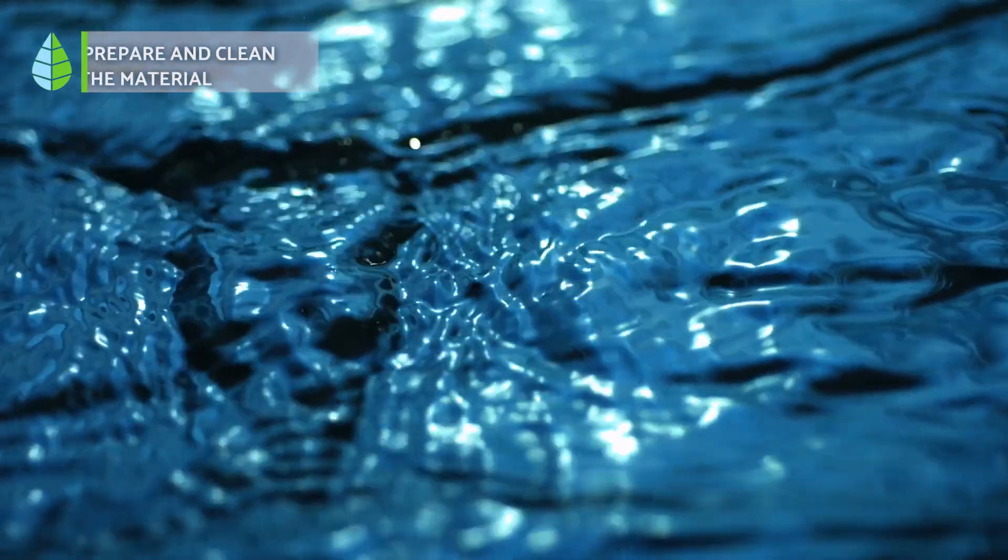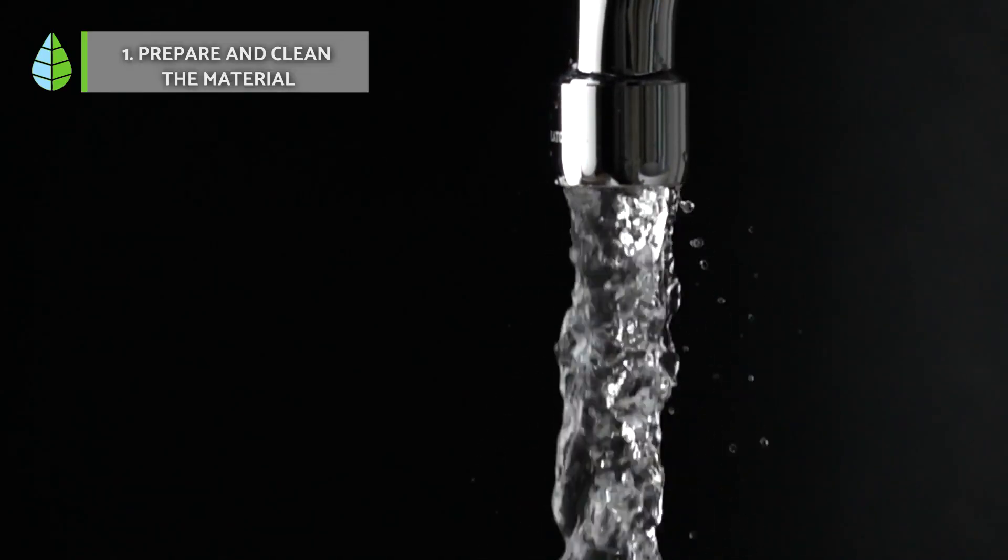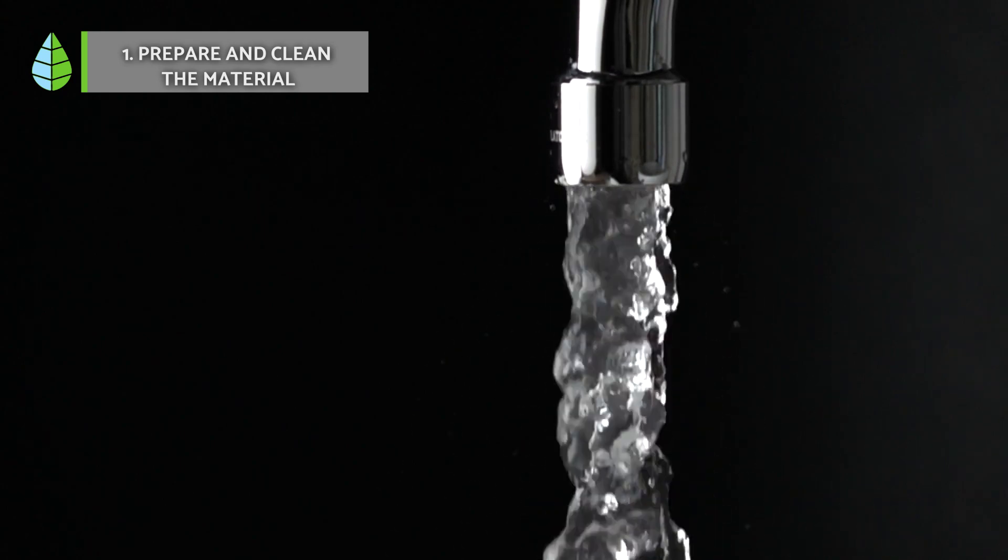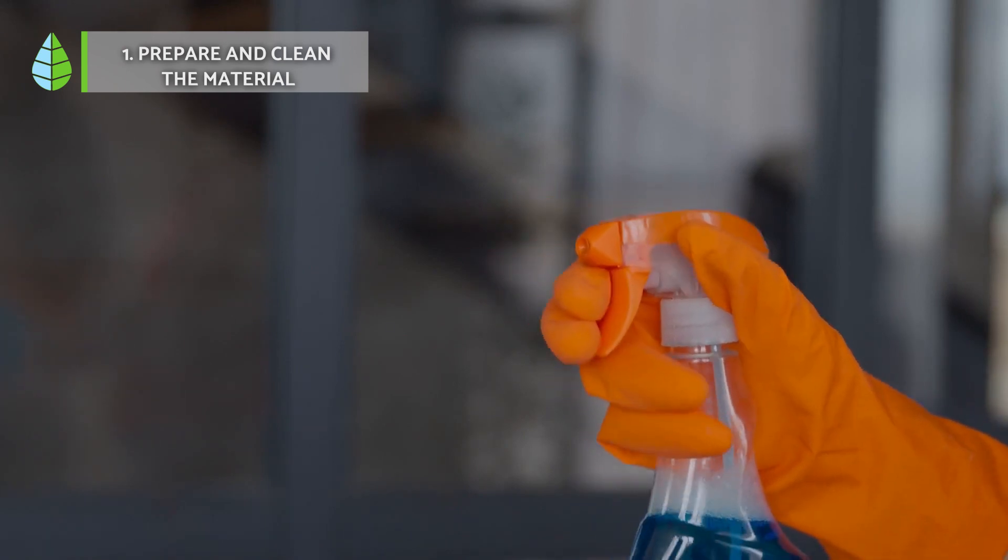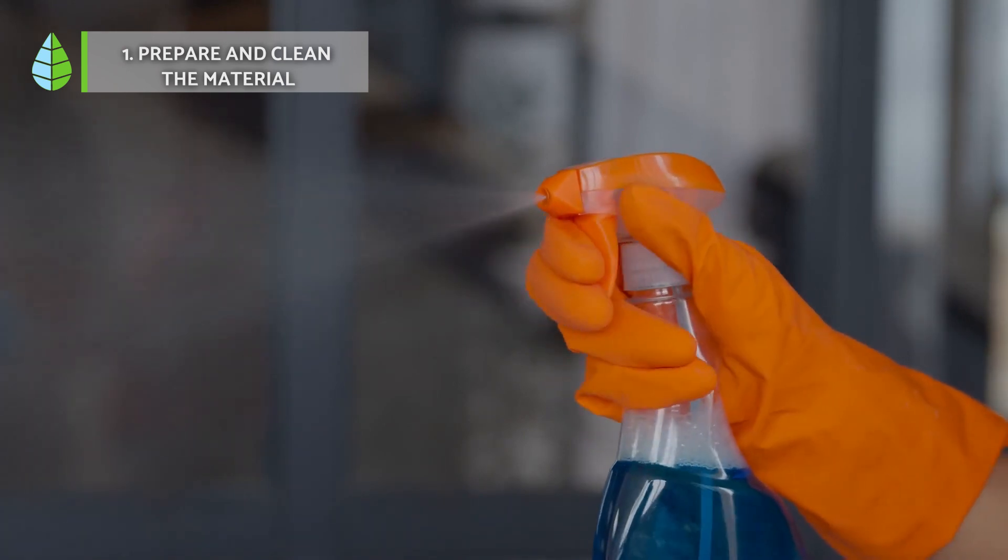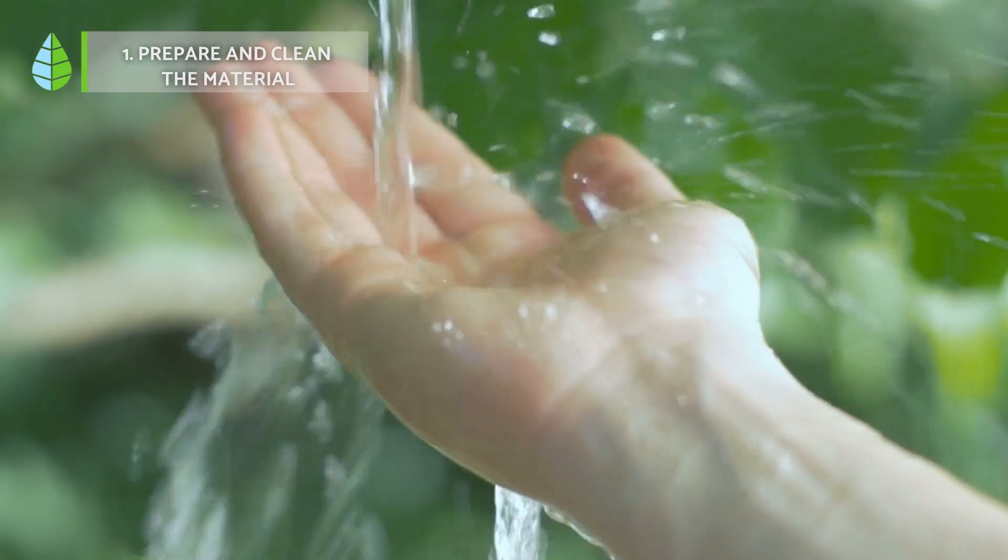Number one, prepare and clean the materials. The first step is to prepare and clean the materials that we will use. The plastic container is cleaned with water and antibacterial soaps while the stones and sand are also cleaned with water and stirred to remove impurities without adding soap.